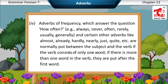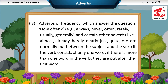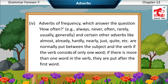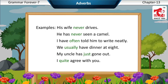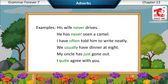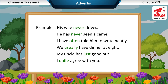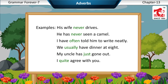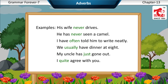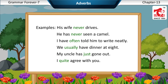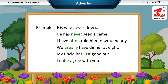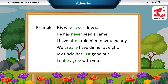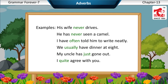If there is more than one word in the verb, they are put after the first word. Examples: His wife never drives. He has never seen a camel. I have often told him to write neatly. We usually have dinner at eight. My uncle has just gone out. I quite agree with you.